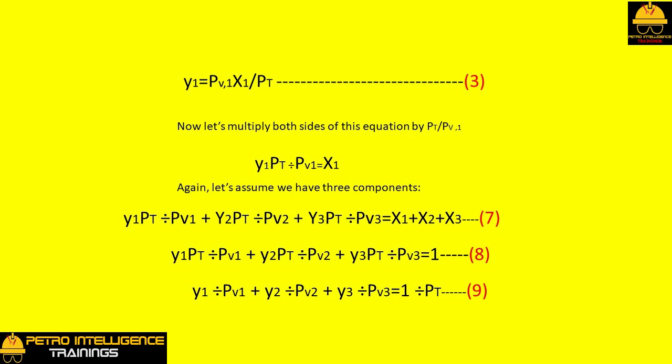y1 PT divided by PV1 plus y2 PT divided by PV2 plus y3 PT divided by PV3 equals x1 plus x2 plus x3. However, if we add up the concentration of the three components in the liquid phase on the right hand side of the equation, we will get 100 percent, which is unity or equal to 1. As before, y1 PT divided by PV1 plus y2 PT divided by PV2 plus y3 PT divided by PV3 equals 1.